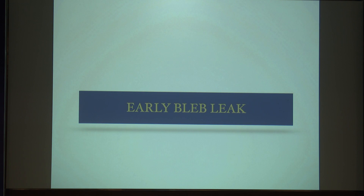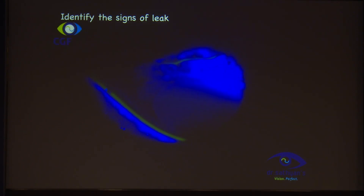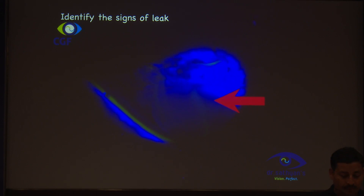Now let us look at the early bleb leak. When you have an early bleb leak, know your leaks — the surgeon will know exactly why they are having a leak. It can be because of a perforation, buttonholing, suture tracks, or inadequate closure. Handle the conjunctiva gently when you perform the surgery. Identify the signs of the leak; you have to do a Seidel test for identifying the signs of leak.